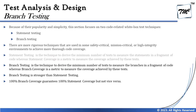As per the syllabus, branch testing is mainly used as a rigorous technique for safety critical, mission critical, or high integrity environments to achieve more thorough code coverage. Branch testing is the technique to derive the minimum number of tests to measure the branches in a given fragment of code, whereas branch coverage is a metric to measure the coverage achieved by the test. Branch testing is considered a stronger technique than statement testing.